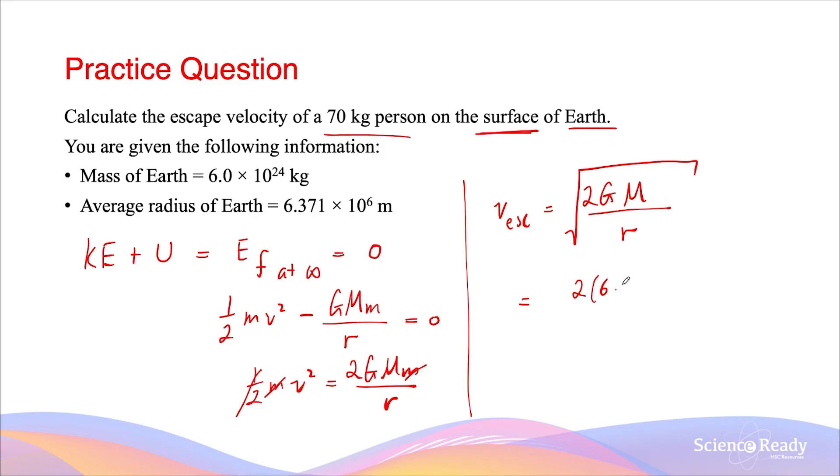G is 6.67 times 10 to the power minus 11. Capital M here is mass of the Earth, so 6.0 times 10 to the power 24. This is all divided by the radius of the Earth because the person is standing on the surface of the Earth, so this is 6.371 times 10 to the power 6 meters. This is all square rooted, and this is equal to 11,200 meters per second.